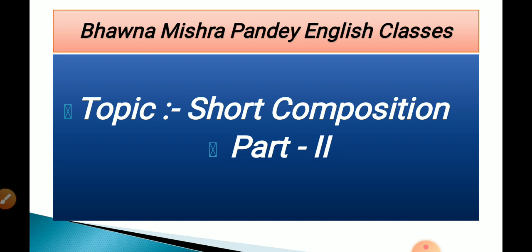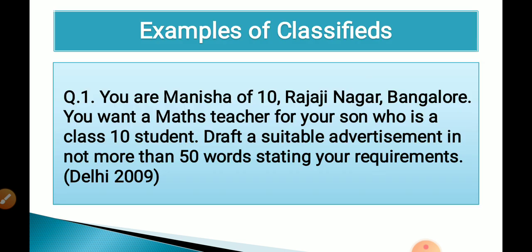We have discussed about the types of advertisement. There are two kinds: classified advertisements and commercial. We were talking about classifieds, and here we are going to take some examples of classifieds.